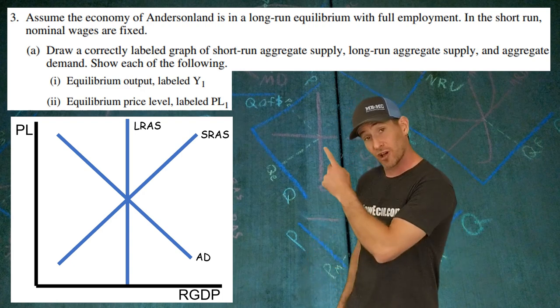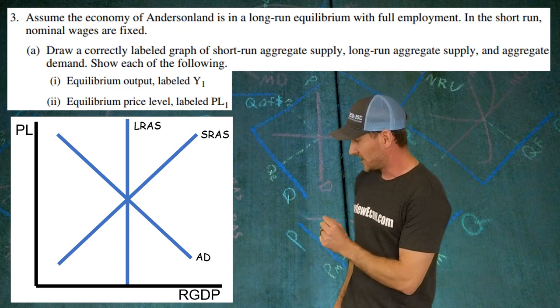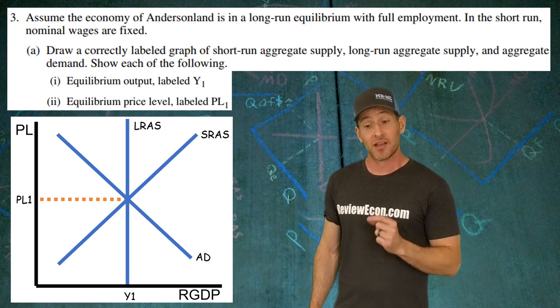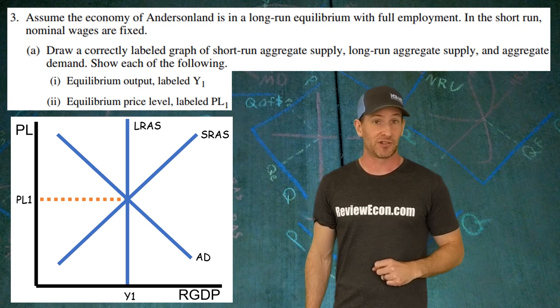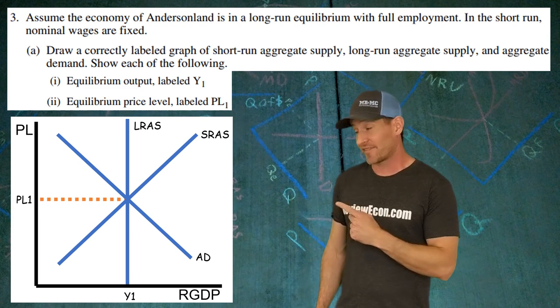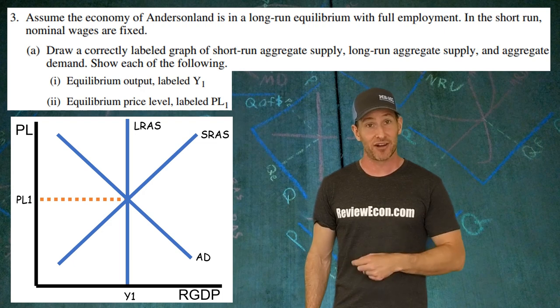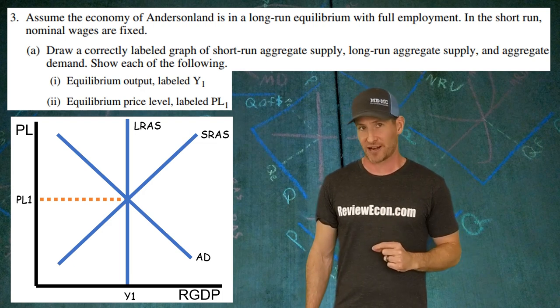Right underneath your long run aggregate supply curve there, you need to have Y1 labeled. That is your full employment output. You also need to mark your price level, PL1. That is found at the intersection between the downward sloping aggregate demand curve and that upward sloping short run aggregate supply curve.